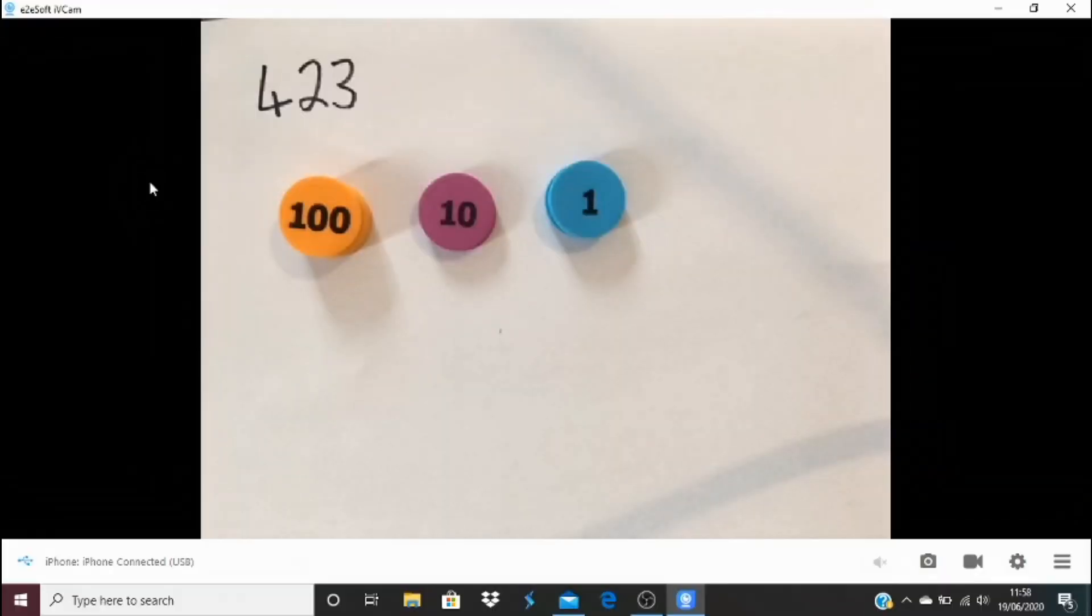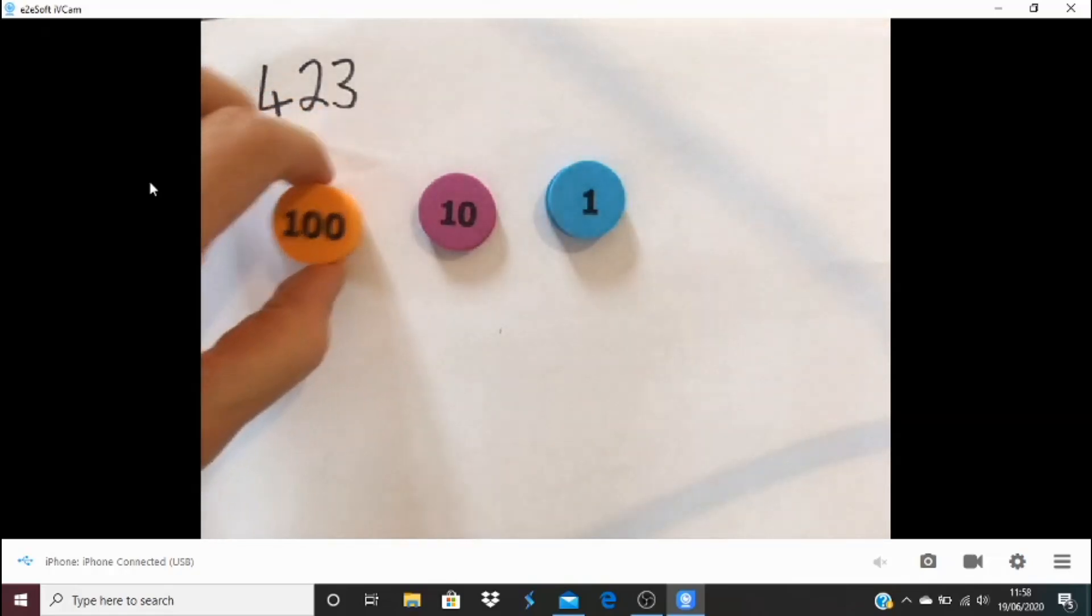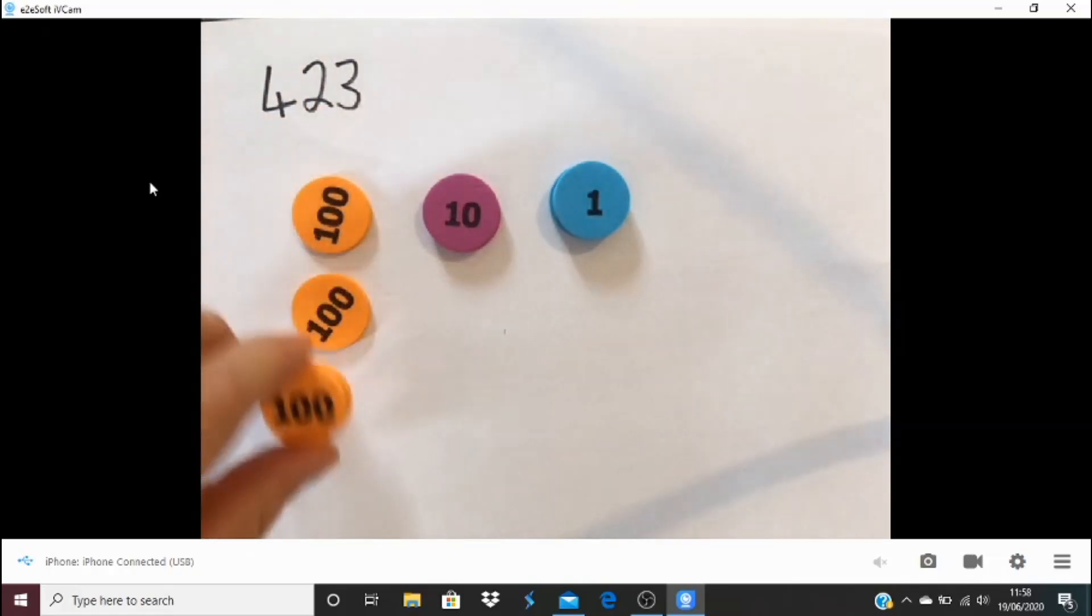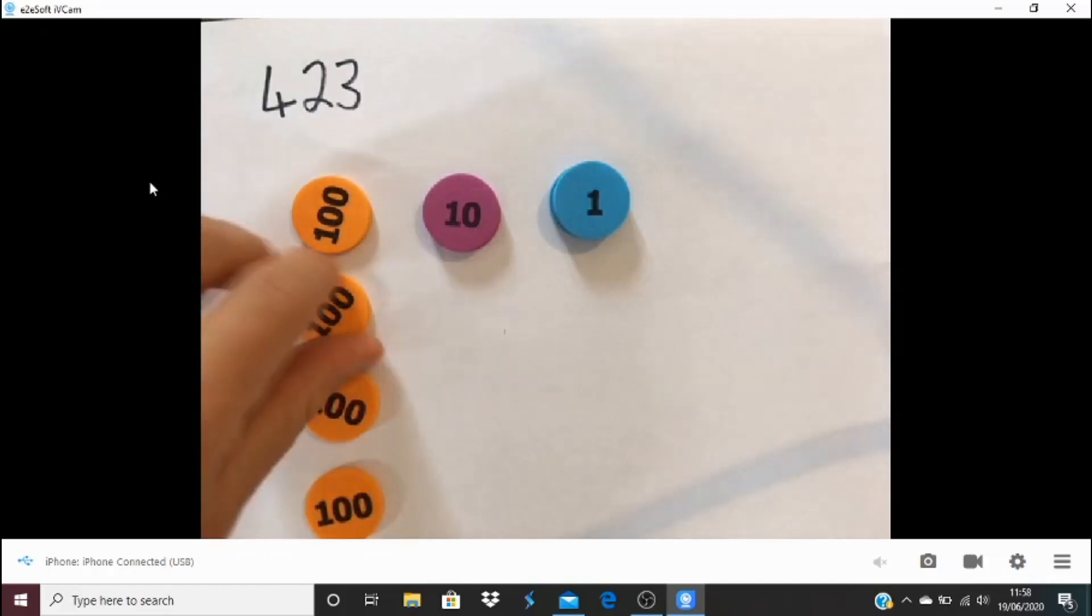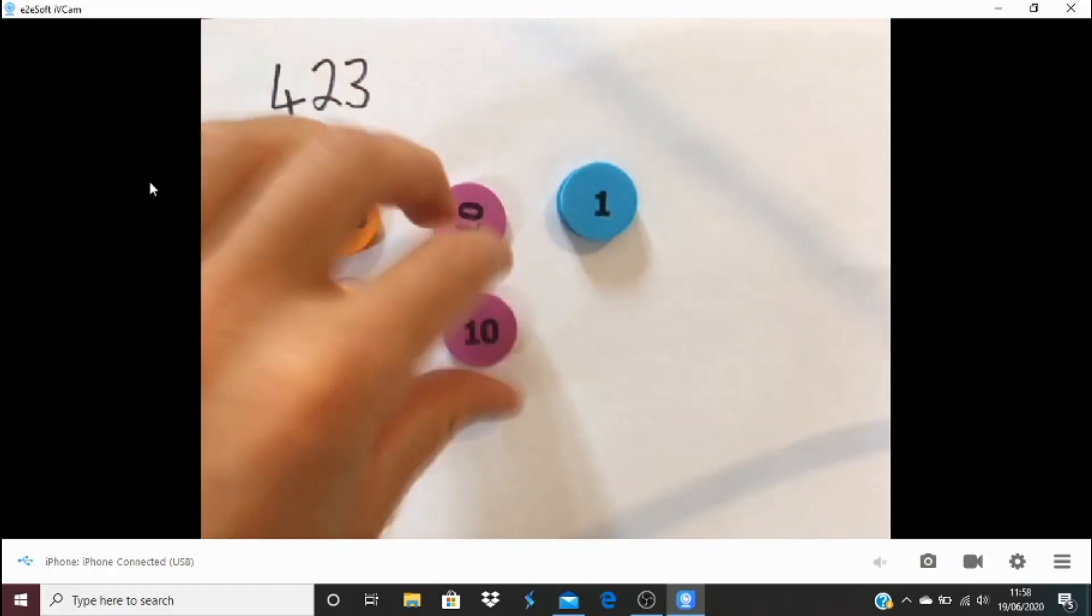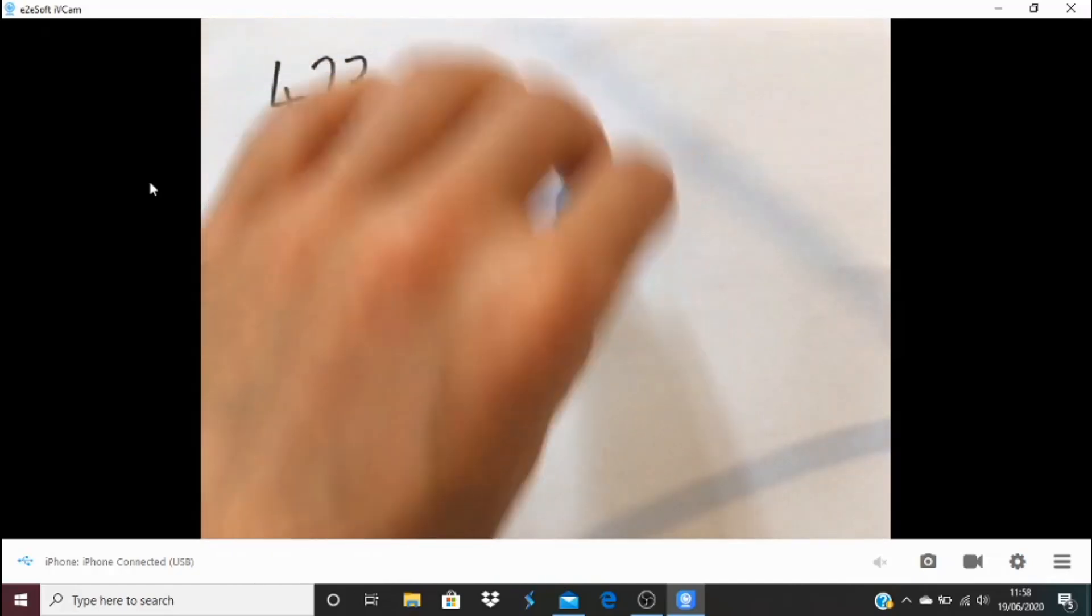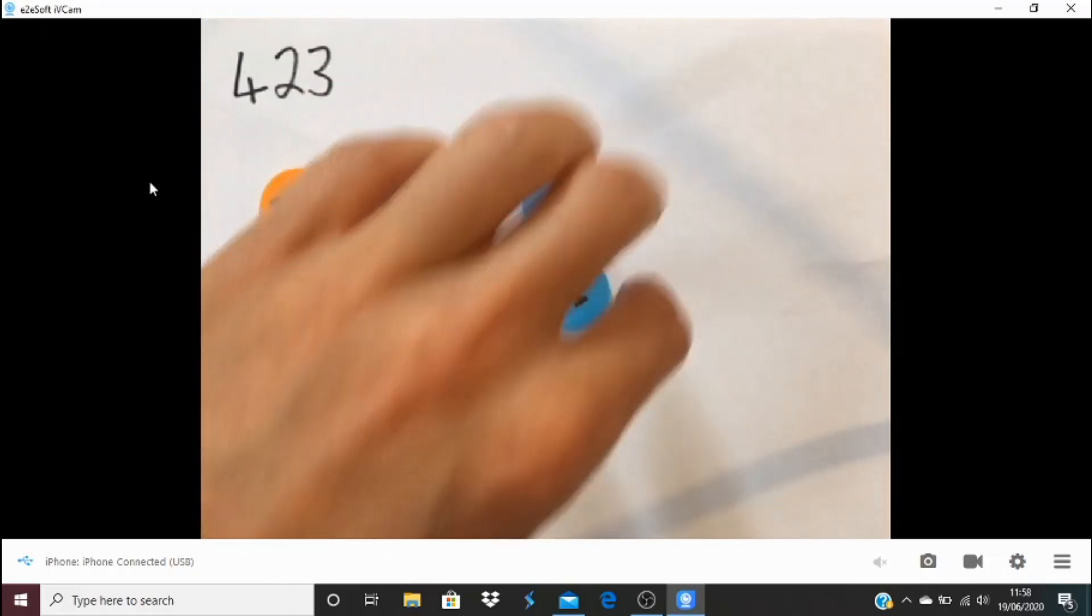I'm going to start today by going back to yesterday's extend task, and that was around making 423. Now, what we typically do to make 423 is 4 hundreds, 2 tens, so that's 20, and 3 ones. And that'd be like a normal way of making 423.